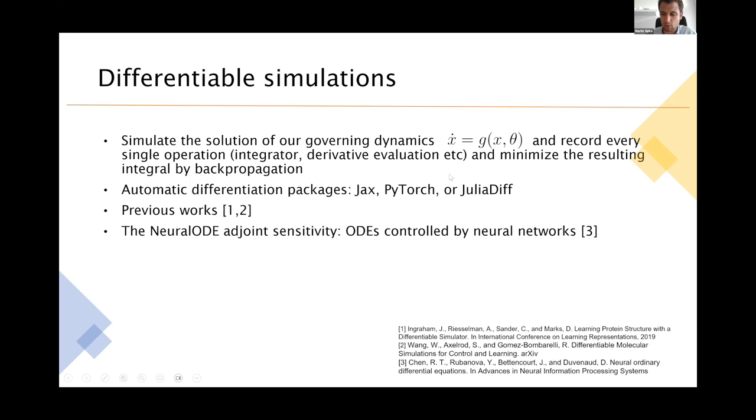So that when we have some complicated dynamics, we can very easily calculate gradients propagating through, let's say, an integrator or even through a potential or even through some control function, which might be a neural network or some parametrization of the curve or something similar.